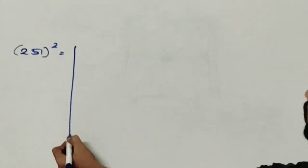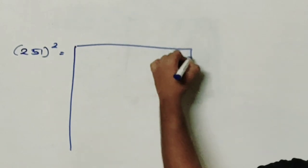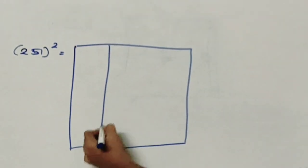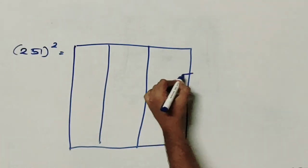This is a 3 digit number. So we need to form a bigger square which will consist of 3 rows and 3 columns.